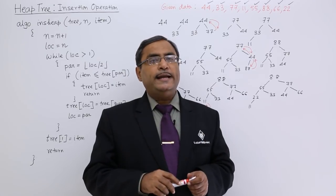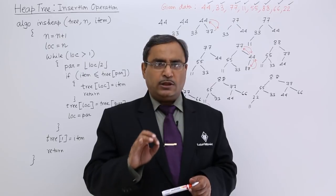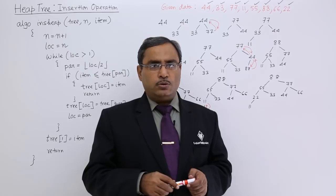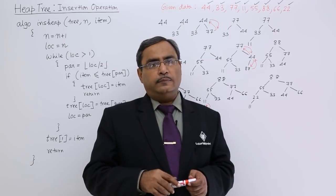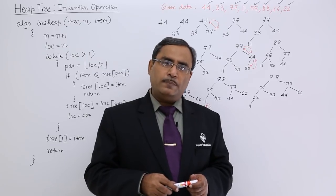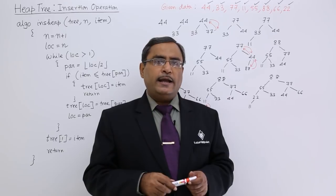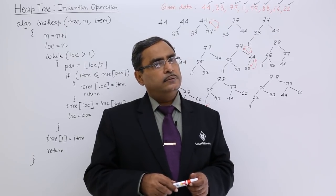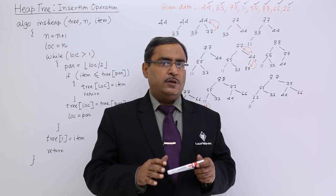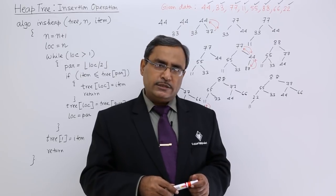It was also mentioned that the kth node will have its left child at the 2 star k place and the kth node on the linear array will be having its right child at 2 star k plus 1 place, and the kth node will have its parent at k by 2 floor of that location. We have discussed everything and those concepts will be used in this particular algorithm for heap tree insertion.